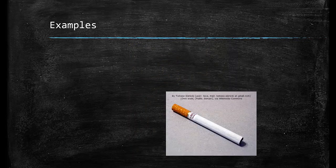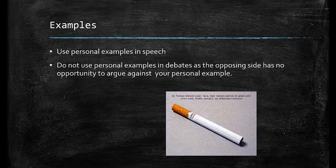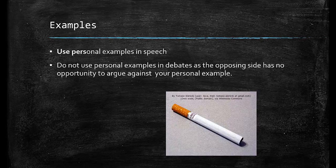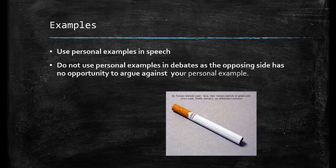Examples are the last form of evidence. You can use personal examples in your speeches, but not in debates. That's because in a debate, the opposing side cannot argue against your personal example as they have no experience with it. A personal example I could use in a speech on smoking may be that, as a child, both my parents smoked and I suffered from earaches for much of my childhood. Examples can be very powerful forms of evidence — they can and should be used in your speeches, but cannot be used in your debates.